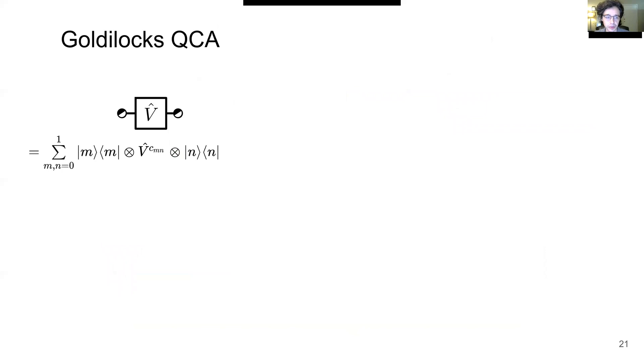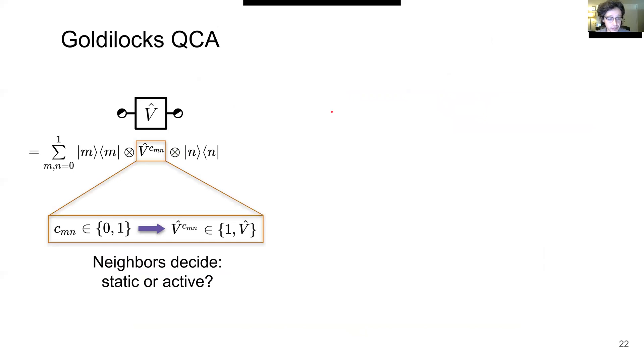Let's take a closer look at this double-controlled unitary gate. It involves the sum over the local state space of the left neighbor as well as the right neighbor, and the center site has an operation of this form. The C_mn are either 0 or 1 and come directly from the rule number. The matrix power V to the C_mn is either the identity if C is 0 or the operator V itself if C is 1. In other words, the neighbors decide whether the center site is static or active.